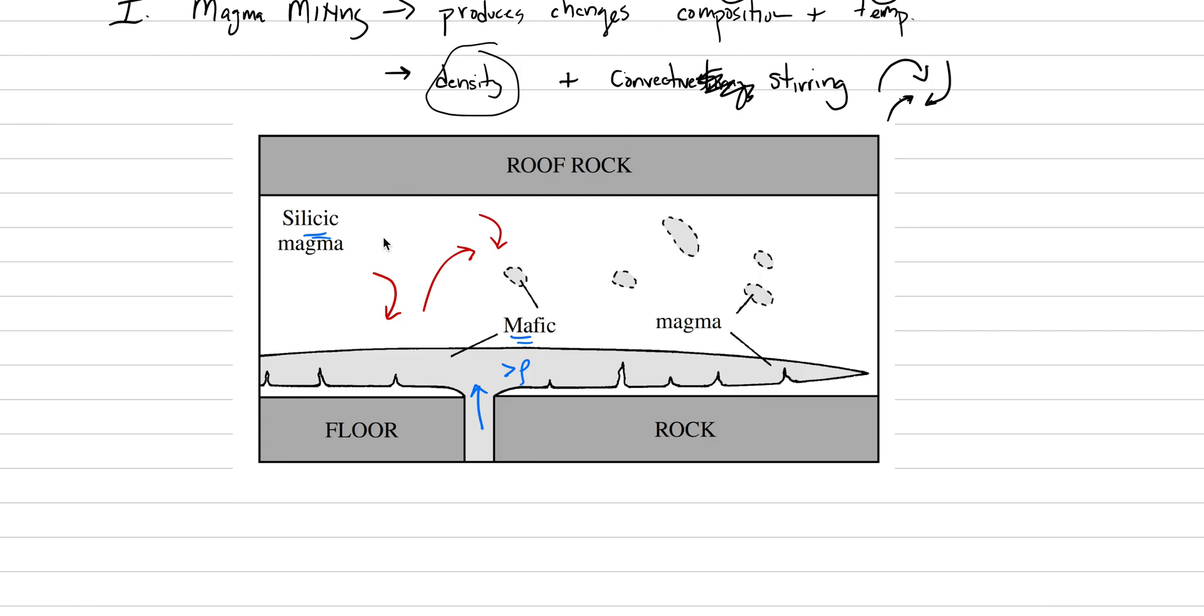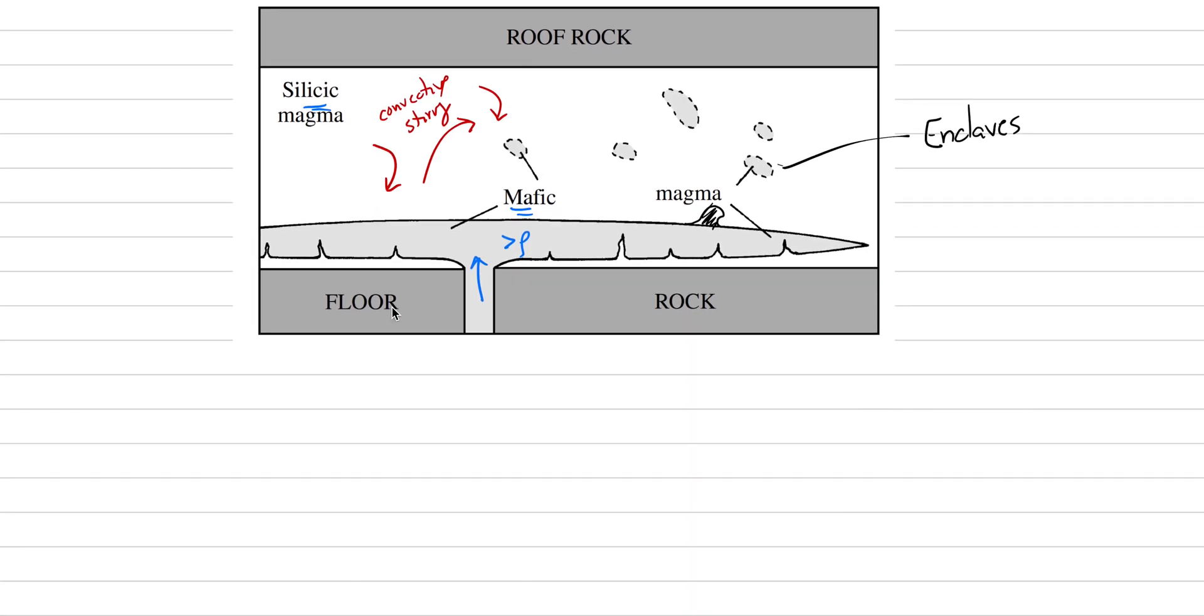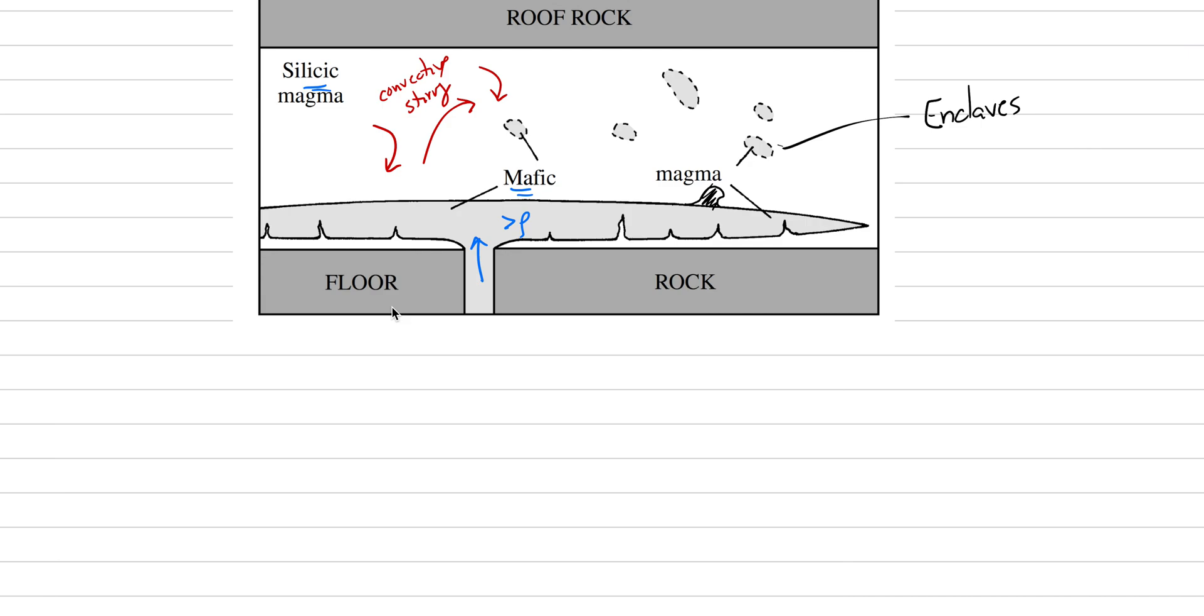This convective stirring will homogenize this into a single resulting magma. And it will, in that process, rip off blebs. If we can imagine like a little bleb coming up here off the mafic, and it detaches and then it gets incorporated into the magma. These little blebs are called enclaves. And enclaves are often seen in magma. So what we need to do is we're getting into right now the textural and compositional effects of this process.